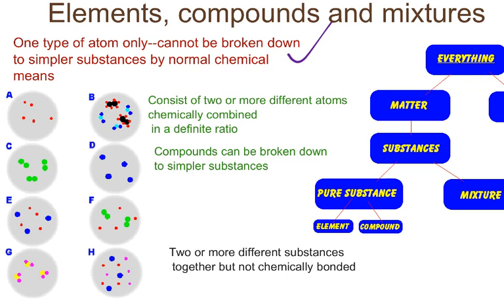Compounds, on the other hand, consist of two or more different atoms — two or more different elements — and they're chemically combined in a definite ratio. For example, H2 is an element, but H2O has two different things chemically combined, so that's a compound. Compounds can be decomposed; they can be broken down into simpler substances. That's an important distinction between elements and compounds.